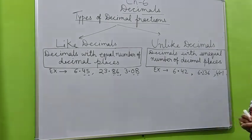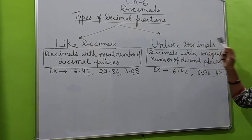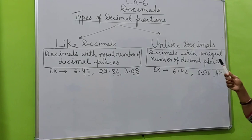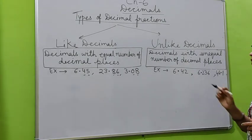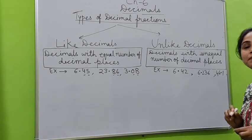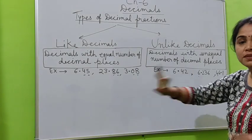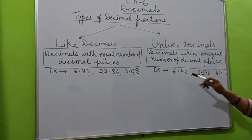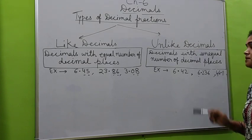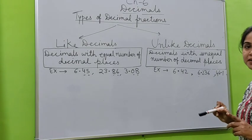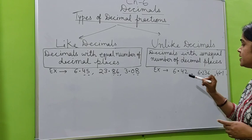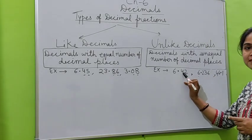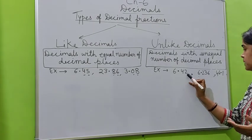Similarly for explaining unlike decimals, I would say that decimals with unequal number of decimal places. Here we will not check that whole part how many places are there. I have told here also same thing here, but in decimal part. Here again I have given three numbers. In decimal parts we must check how many places are there.